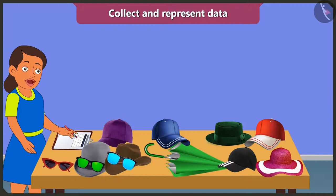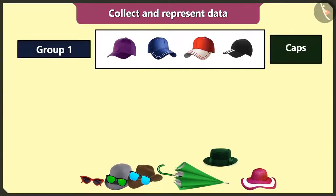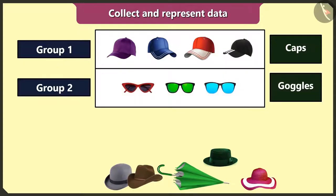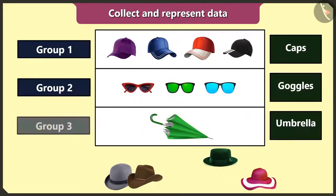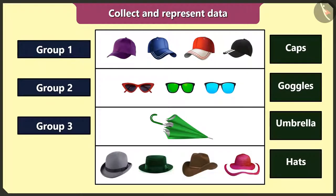So as we all know that summer season is nearing, I will collect data about the number of caps, the number of goggles, the number of umbrellas, and the number of hats that I have. So first of all, I will make groups of similar objects: first group of caps, second group of goggles, third group of umbrellas, and the fourth group of hats.